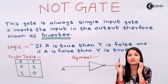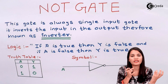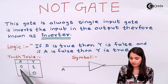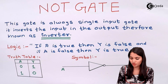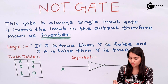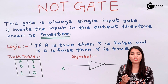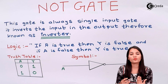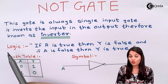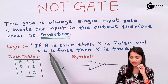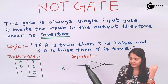Why is it known as an inverter? Because whatever input we give, the NOT gate will give you the opposite of that input. If we give a zero input, the NOT gate gives us the output as one. And if we give a one input, the NOT gate gives you the output as zero. The logic of the NOT gate says: if A is true, then Y is false; and if A is false, then Y is true.